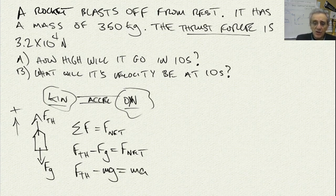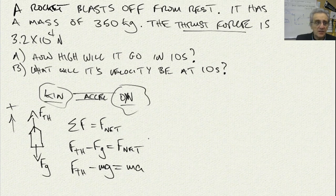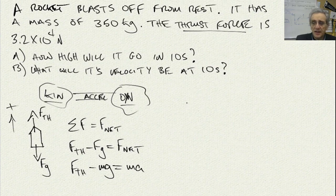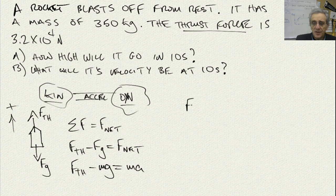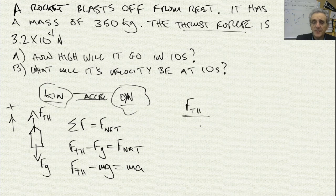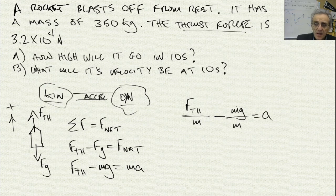Now let's solve for acceleration algebraically. I can say thrust force divided by M minus MG divided by M equals A. So I've just simply divided the entire equation by M. My M's cancel on the MA part. The M's cancel here as well.